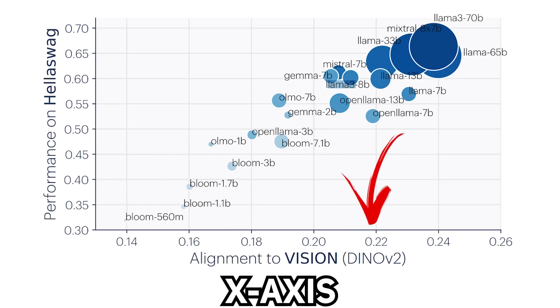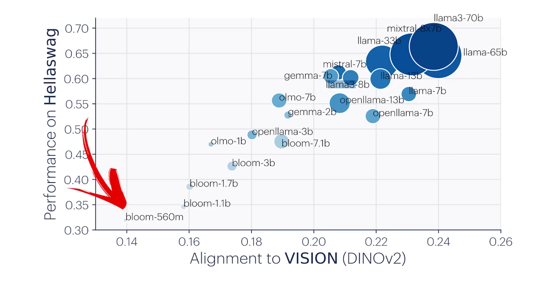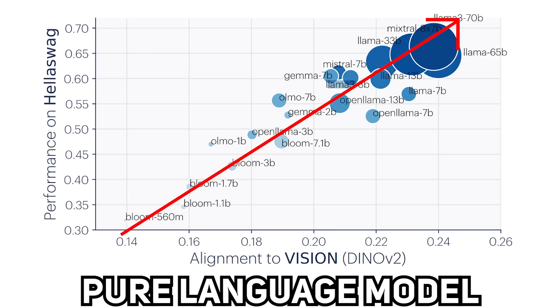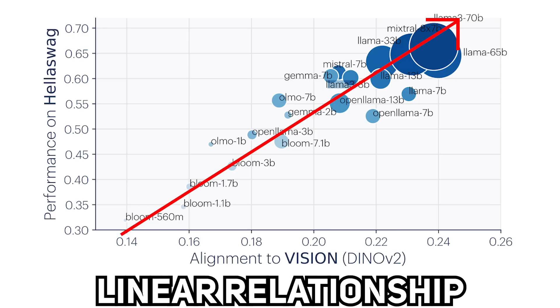On the x-axis, it is showing the alignment value with Dyno V2, which is a vision model. The data points then go from Bloom 560 million parameters all the way to LLM 370B. So this tells us that with an increased performance, there is an alignment between a pure language model and a pure vision model with a strong linear relationship.